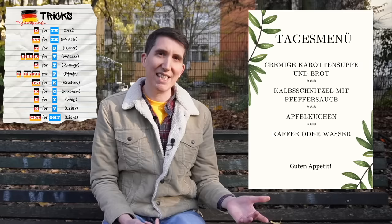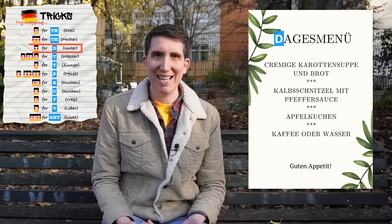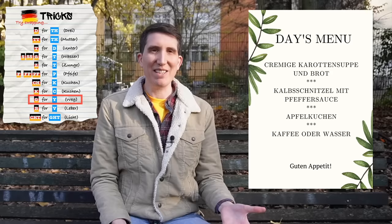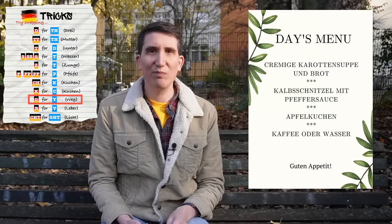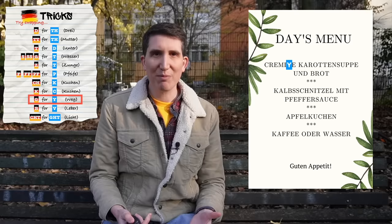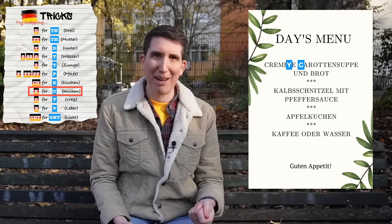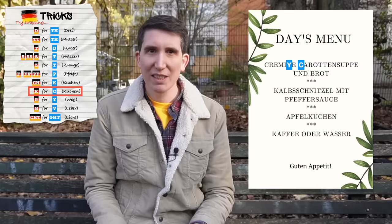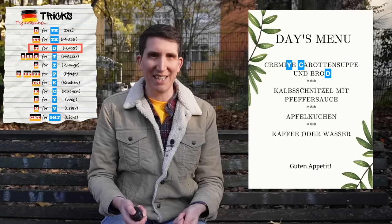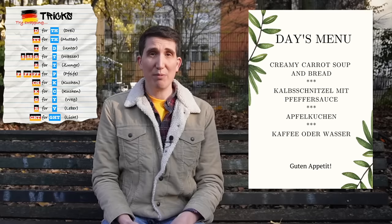Those are all the tools you need to be a consonant trickster. So let's put them to the test and bring back the mystery document from earlier. At the top it says 'Tagesmenu' — let's work our magic: swap the T for a D and the G for a Y and we get something very close to 'day's menu'. This is a menu of the day's specials. For starters: 'cremige Karottensuppe' — we do a G and Y swap in the first word and get much closer to 'creamy', and then we can swap the K for a C in the next word. This is creamy carrot soup. 'Und' is just German for 'and', and if you swap the T at the end of the last word for a D, you can work out that's 'Brot' — bread.